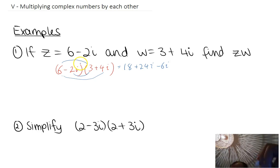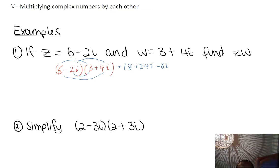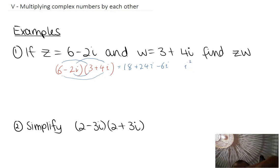And this is the only bit that's going to confuse us: negative 2i times positive 4i. Let's think about what that is. That's i times i — if those were x's, it would be i squared. So I'll write i squared there. And negative 2 times 4 is negative 8.